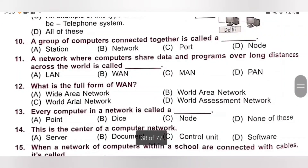Tenth one. A group of computers connected together is called a dash. A. Station, B. Network, C. Port, D. Node. A group of computers connected together is called a network. Option B is the correct answer. Eleventh one. A network where computers share data and programs over long distances across the world is called WAN — Wide Area Network. Option B, Wide Area Network, is the correct answer.